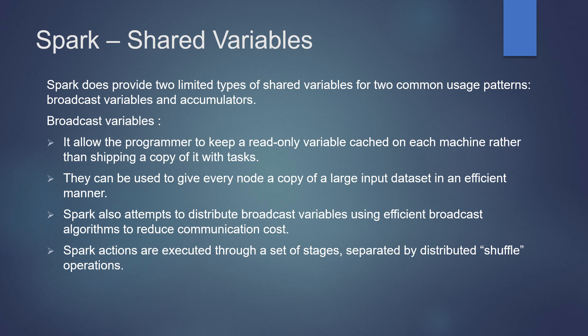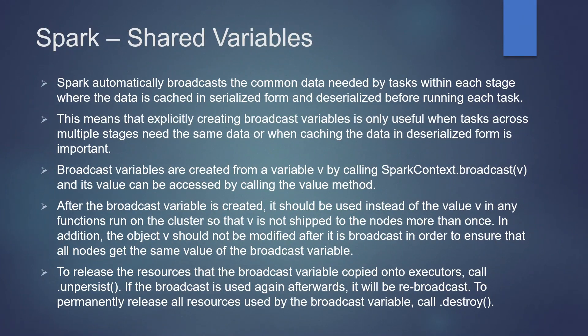Spark actions are executed through a set of stages separated by distributed shuffle operations. By default, Spark automatically broadcasts the common data needed by tasks within each stage, where the data is cached in serialized form and deserialized before running each task. We need to create broadcast variables when tasks across multiple stages need the same data, or when caching the data in deserialized form is important.